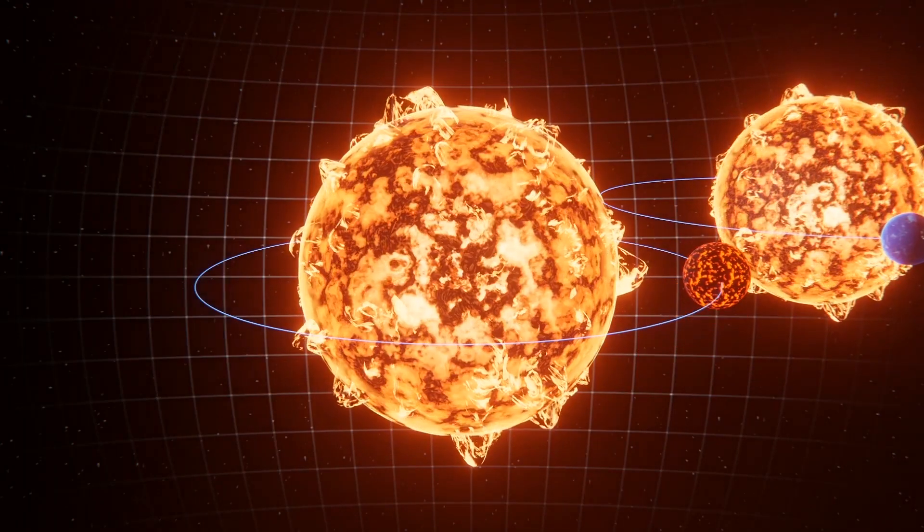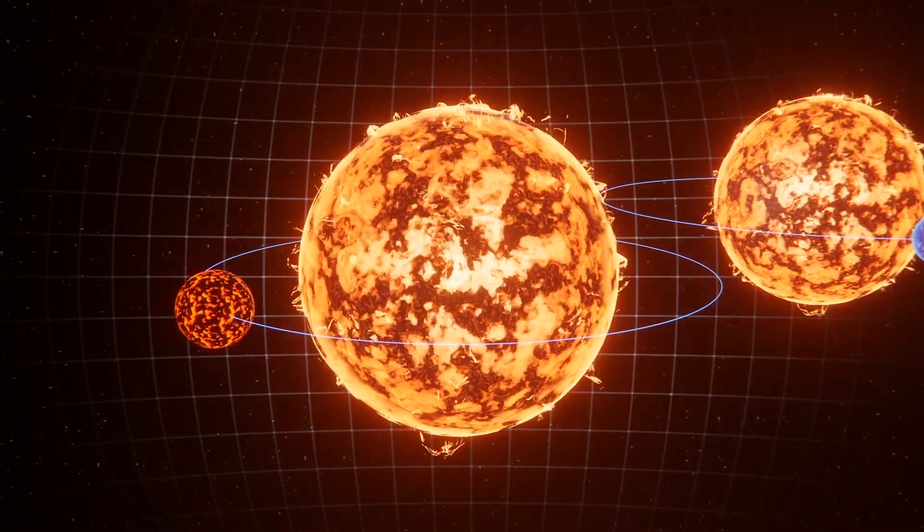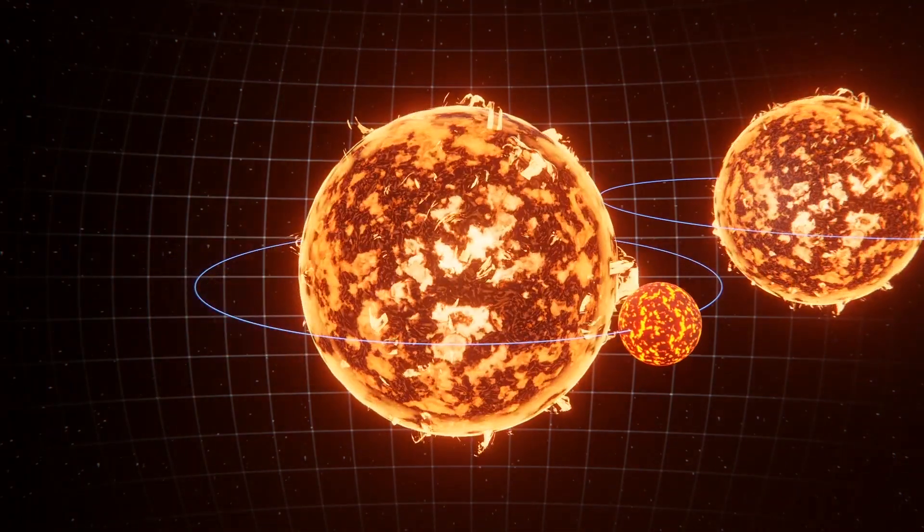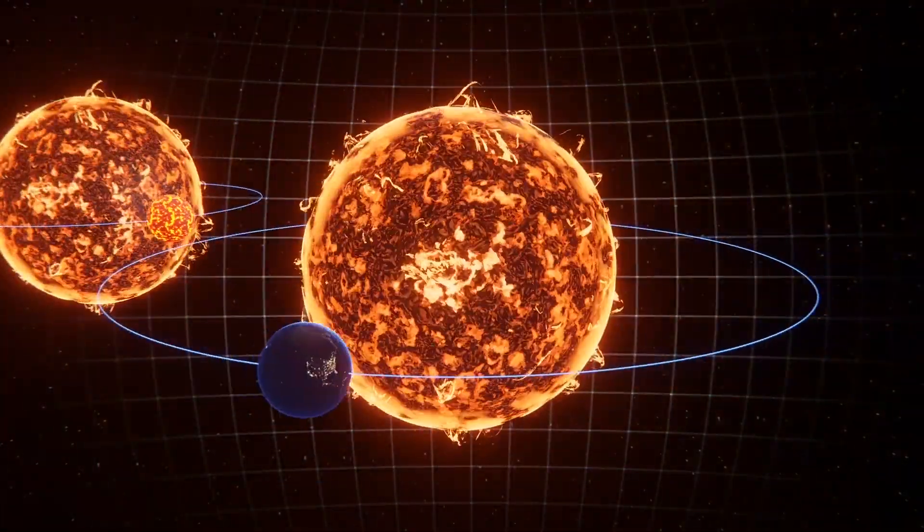According to new research in the Astrophysical Journal, hot super-Earths circle their host stars in 10 days or less, and they reflect 40% to 50% of their star's light.